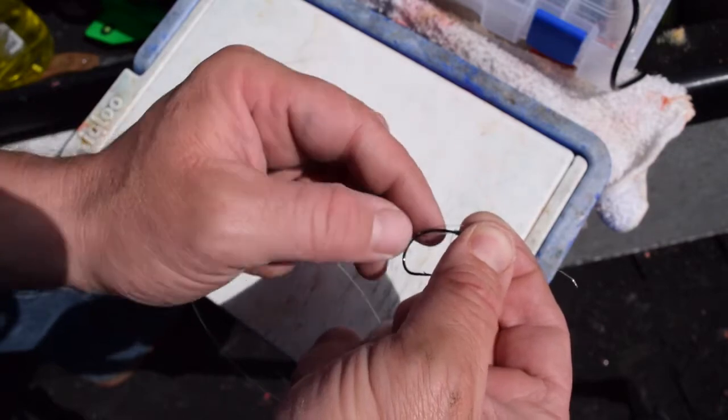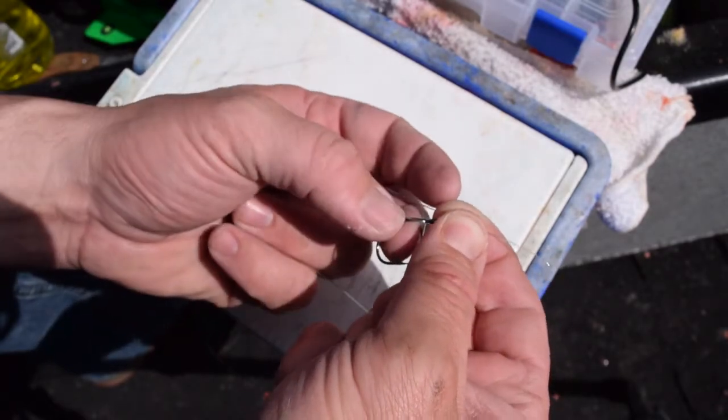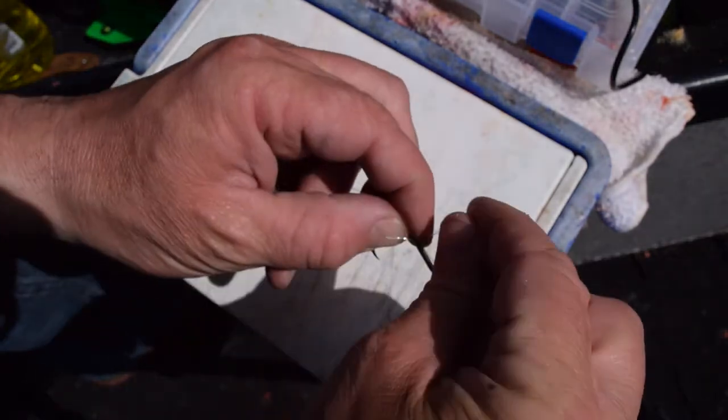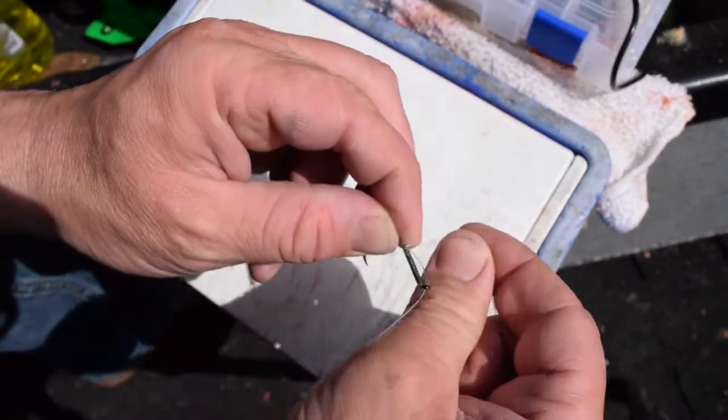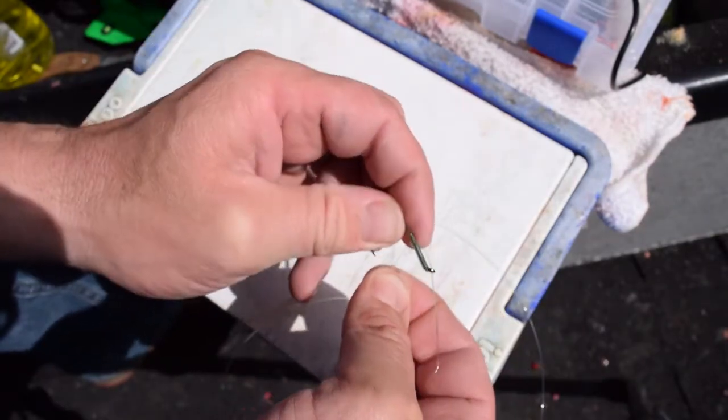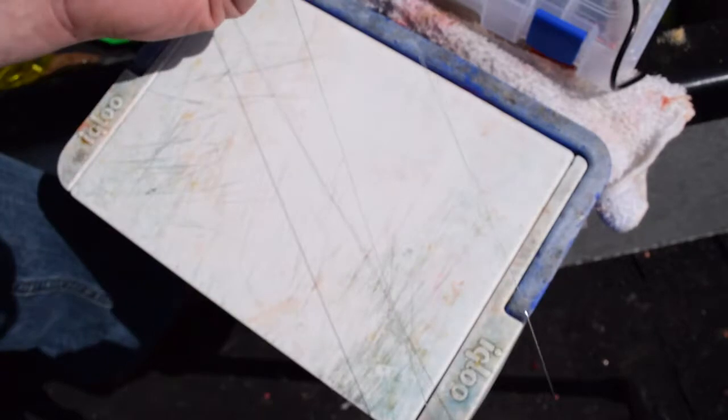Goes along the back of the shank, making sure you don't get the tag end here tangled with it. And then you're going to loop it over it one, two, three, four, five times. Then you gotta pinch it, okay?